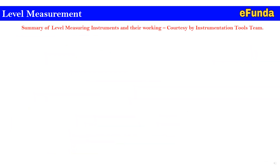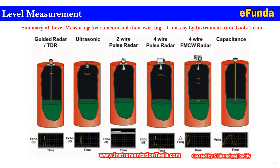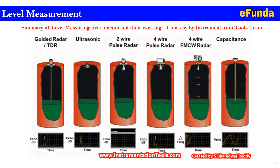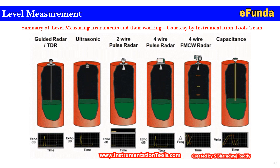We have reached the most important summary of level measuring instruments and their working, courtesy of the Instrumentation Tool team, who have created an excellent animation covering all different types. Starting with guided wave radar TDR type, one can see pulses sent and reflected with a plot shown simultaneously — then ultrasonic type, two-wire pulse radar, four-wire pulse radar, four-wire FMCW radar, and capacitance type. For each instrument type, a graph is plotted to understand its performance and output.